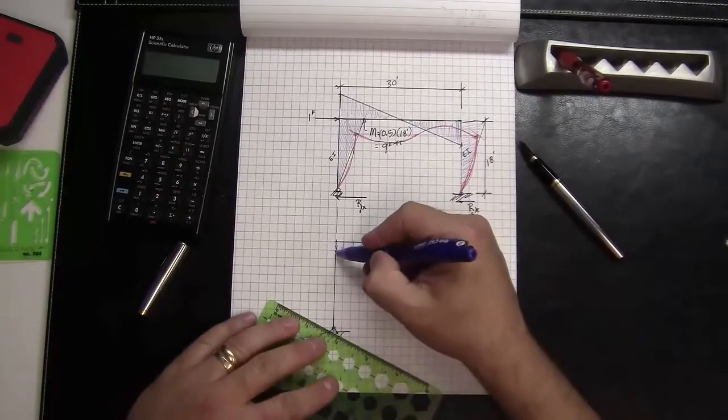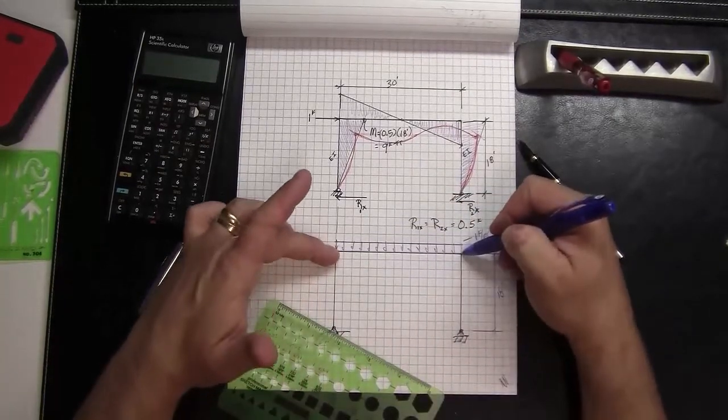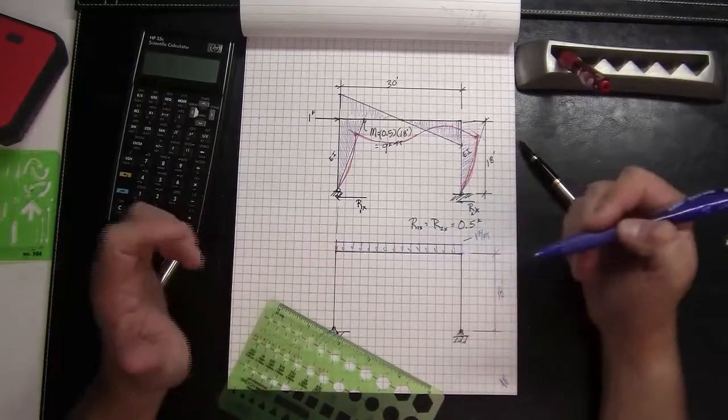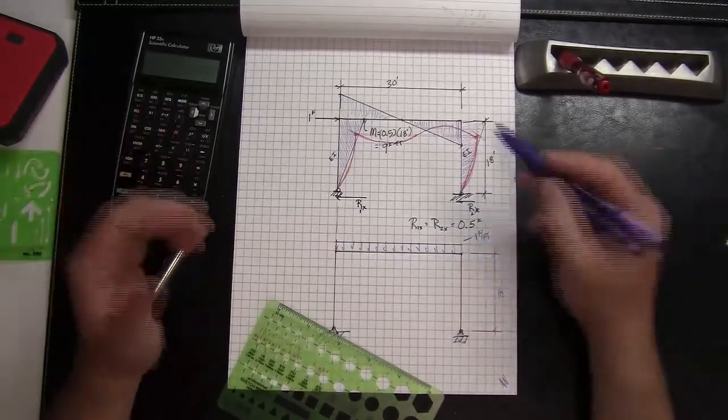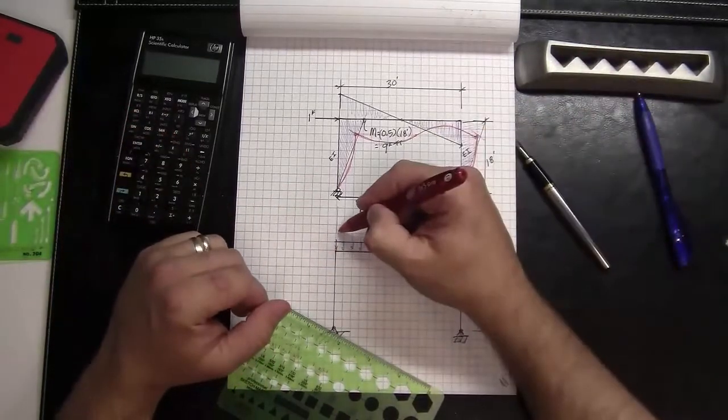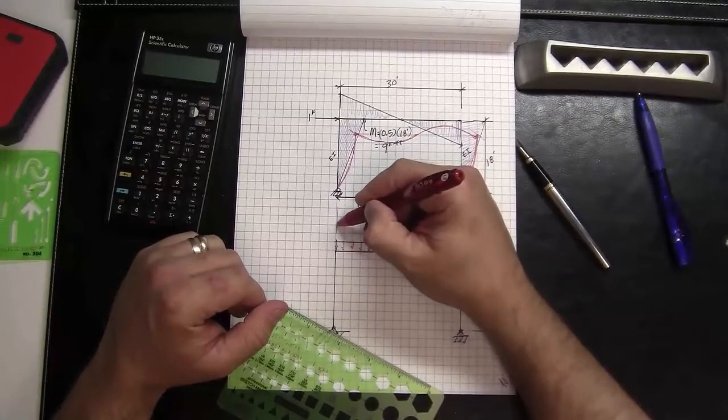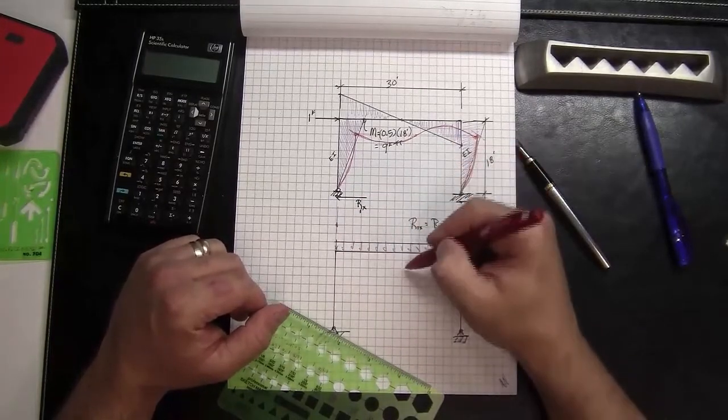And I know that this is simply a fixed beam at supports because there's continuity here. And so if I wanted to take this in the simplest form and begin looking at the moment diagram, I know it will be greatest at the supports.